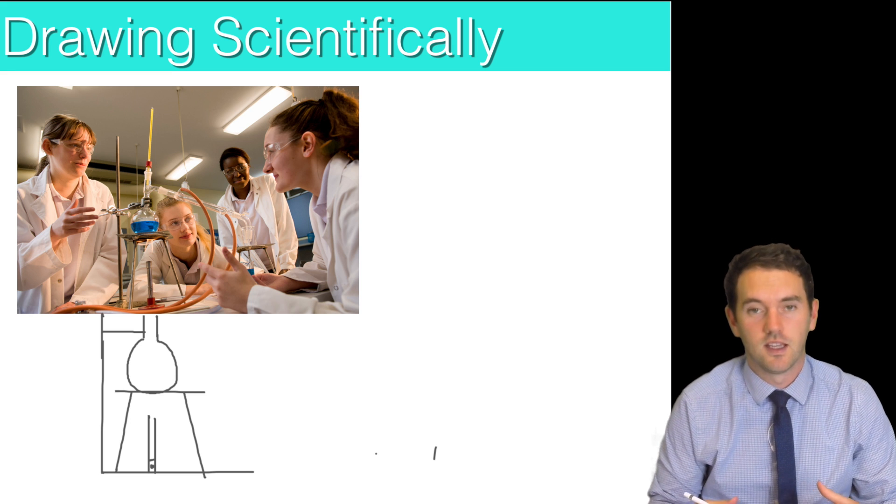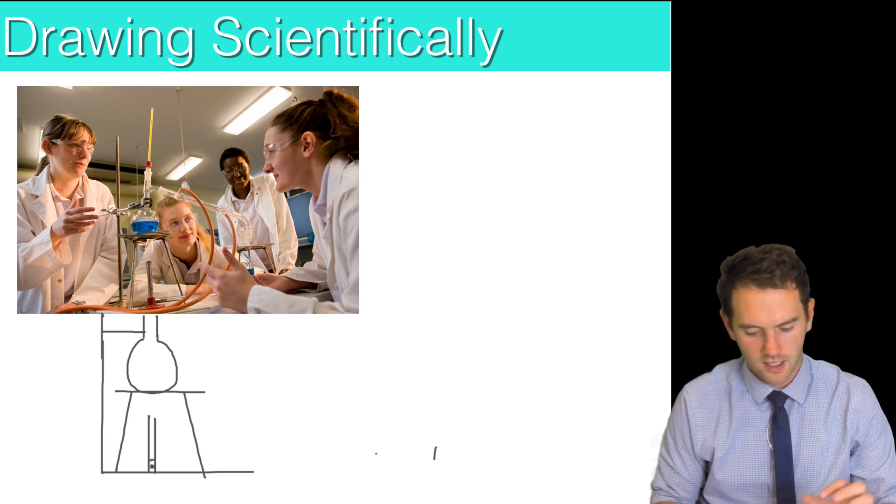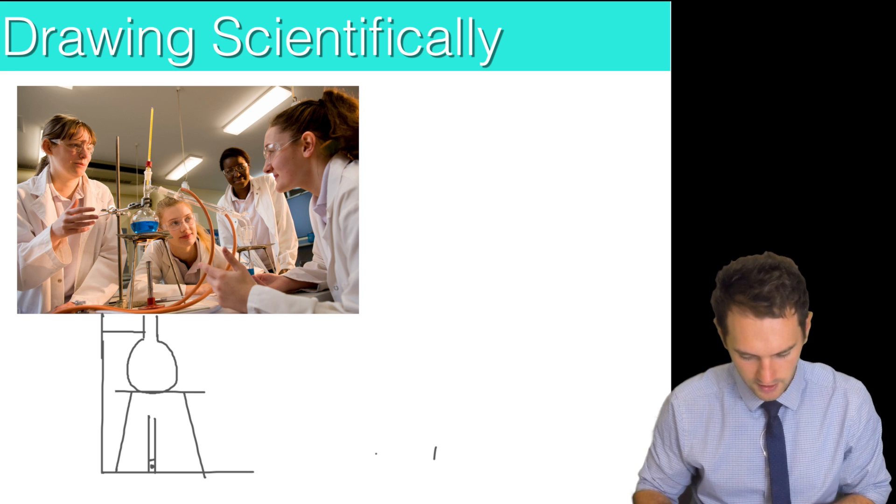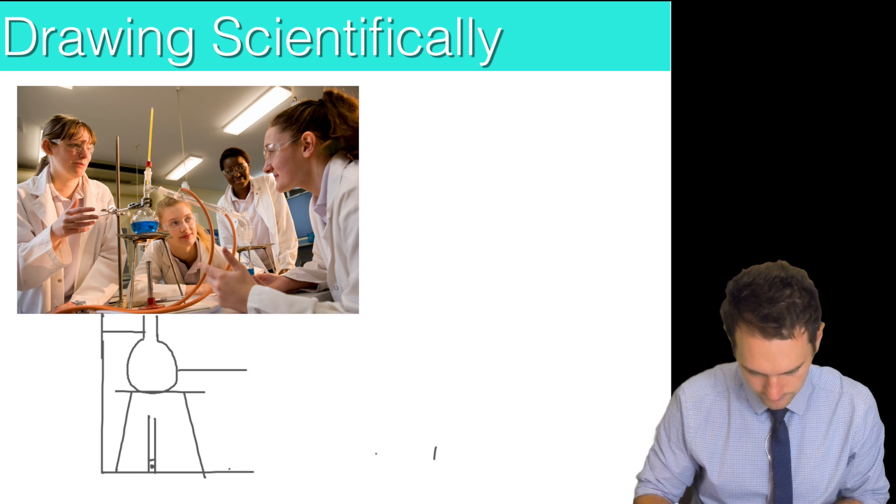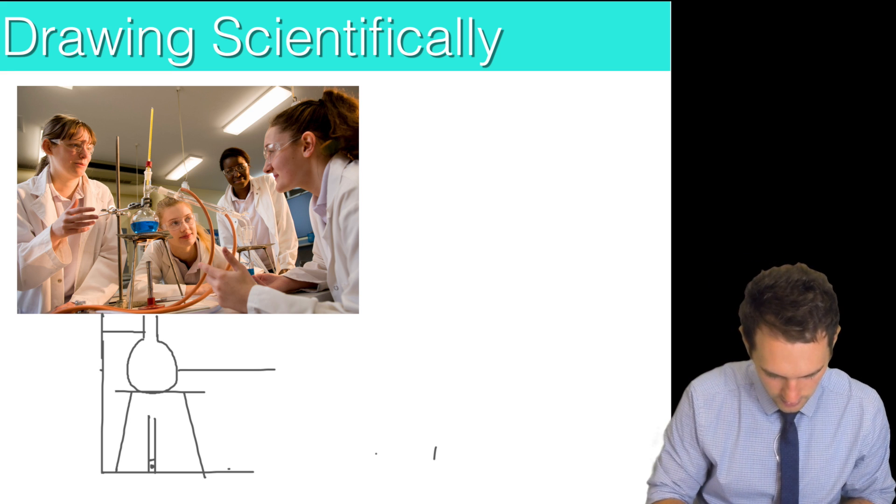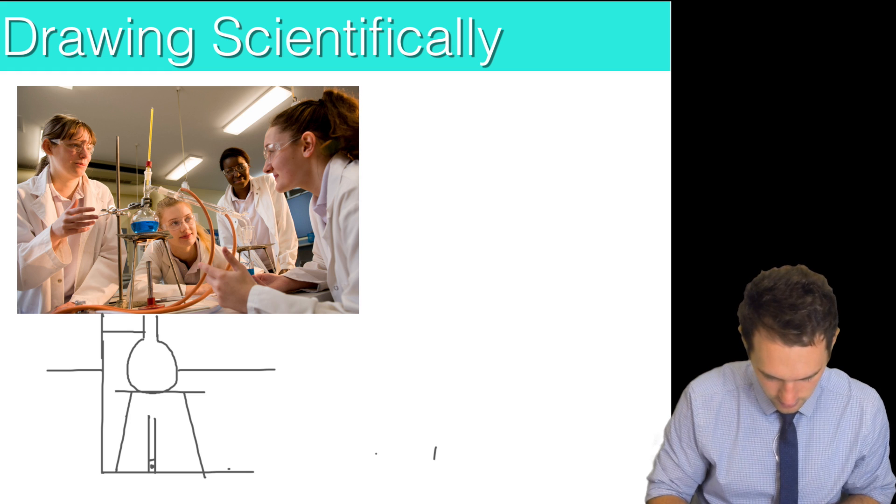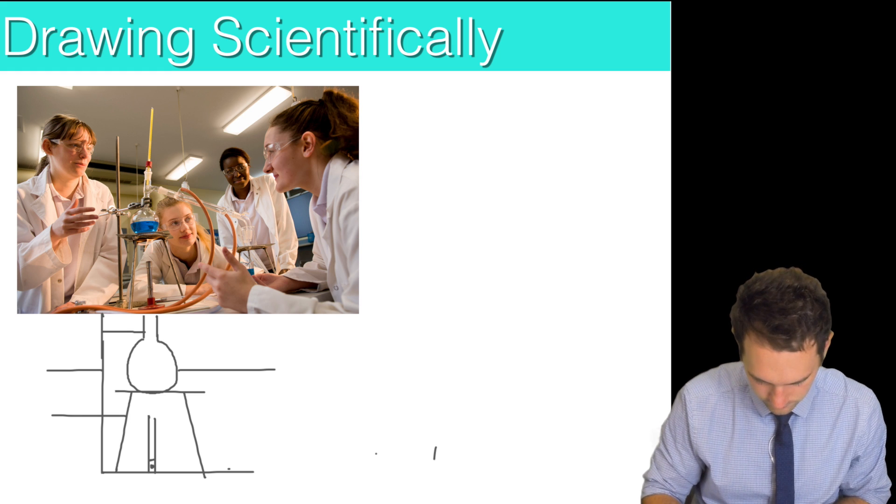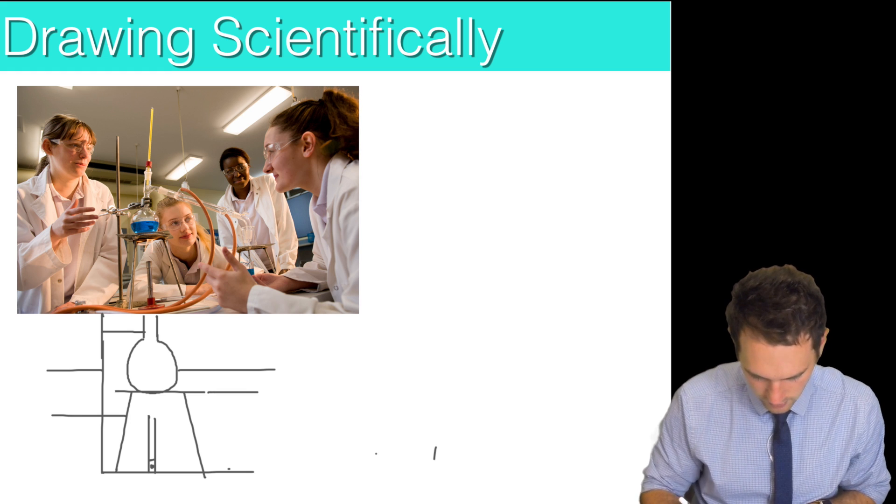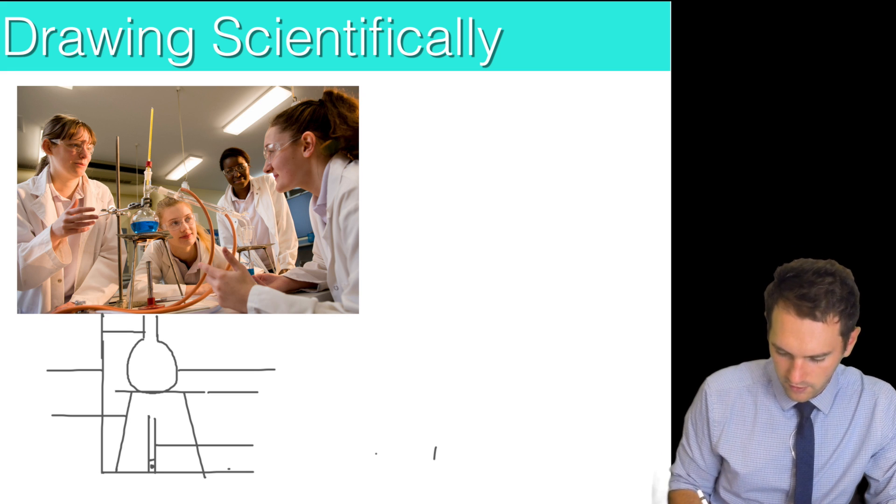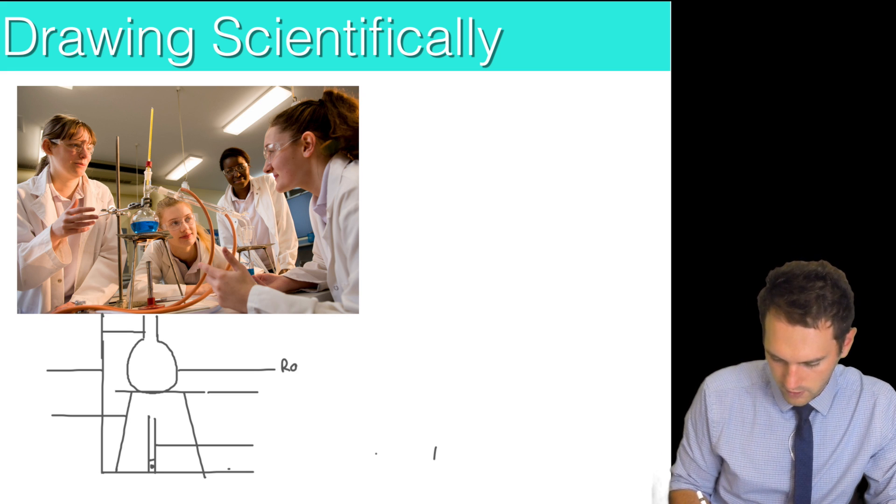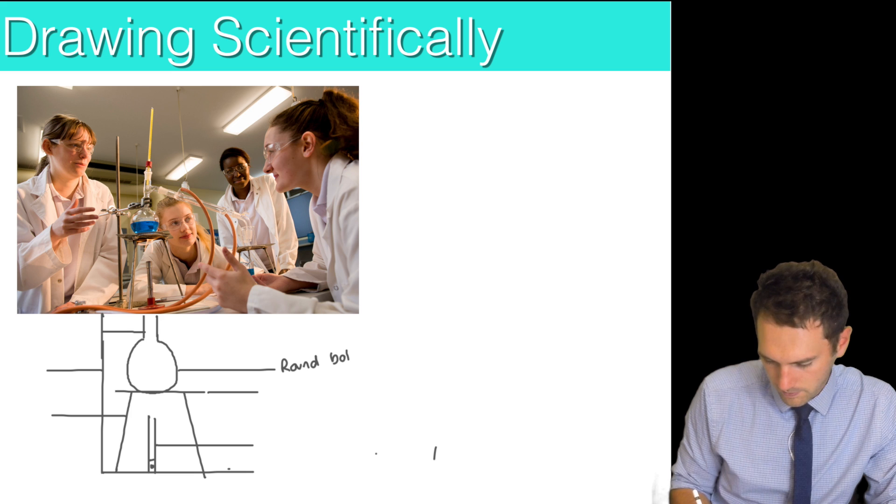There's a scientific drawing of an apparatus but it's not done is it? I'd have to label it. So I come out to the side and I'd label each section with nice beautiful straight lines. For example this would be the round bottom flask.